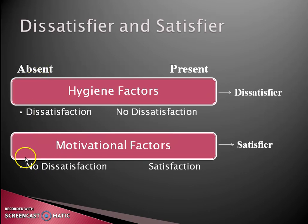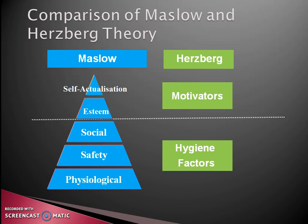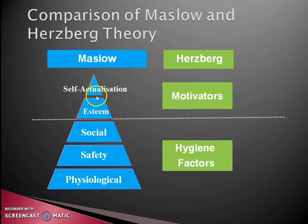If motivational factors are absent, that will not create any dissatisfaction, but if present they will definitely create higher satisfaction — so these are known as satisfiers. Comparing Herzberg and Maslow, the first three needs of Maslow (physiological, safety, and social needs) correspond to hygiene factors, while the higher-order needs (self-esteem and self-actualization) correspond to motivational factors. Unlike Maslow, Herzberg has no hierarchy, which removes that key limitation.